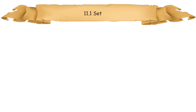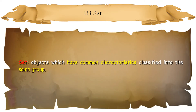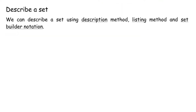11.1 Set. The objects which have common characteristics will be classified into the same group. Each of these groups is known as a Set. We can describe a set using the Description method, Listing method, and Set-Builder notation.